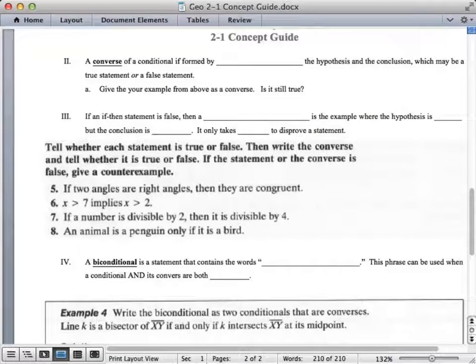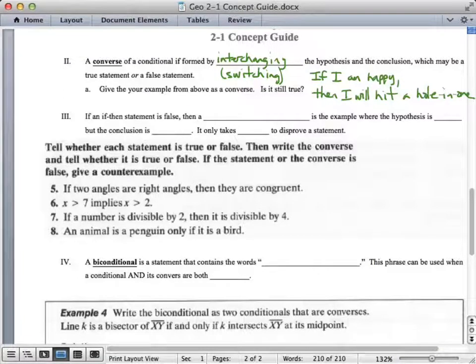All right, the next piece of this, the next important term is called a converse. It is a conditional that is formed by interchanging the hypothesis and conclusion, where you switch the hypothesis and conclusion. But a converse is not necessarily true or false. It's just simply switching them, and then you make the determination. So, in my example, I said, if I am happy, then I will hit a hole-in-one. Is that true? I'm apparently not very happy very often, because that's only happened once. So, no, that's not very true, because I've been happy before and haven't hit a hole-in-one. What is yours? How does it turn around? Is it true? It's kind of hard to come up with one that's true both ways.